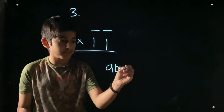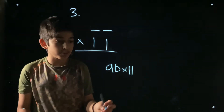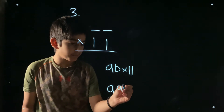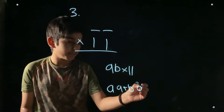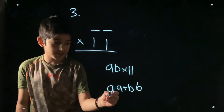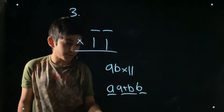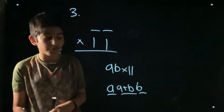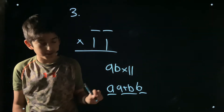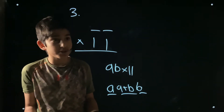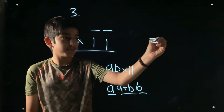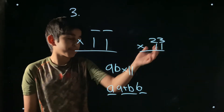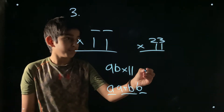The last multiplication trick is for multiplying by 11. If you have a two-digit number a b multiplied by 11, the answer is: a, then a plus b in the middle, then b at the end — giving three digits. However, if a plus b has a carry, that carry gets added to a.